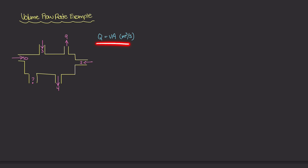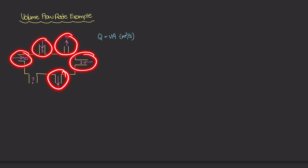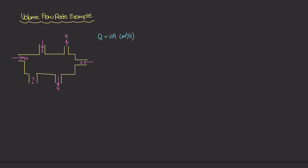If you're unsure of where this comes from, I would highly recommend watching the last two videos in this playlist, where I talk about what Q is and how it's derived from a flow tube scenario. In this example, we have all of these flow rates labeled for all of the inlets and outlets except one, marked with a question mark. The question is: what is the flow rate through this unmarked tube, given that we have the flow rates for all other openings?